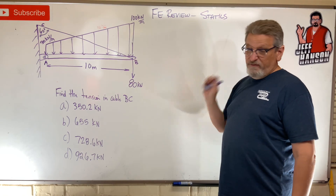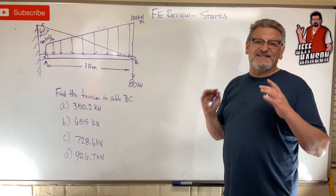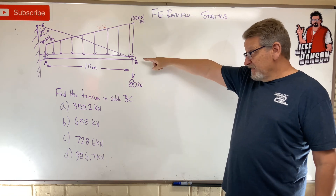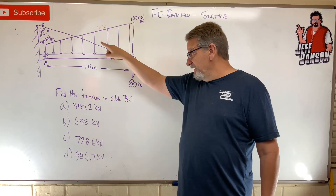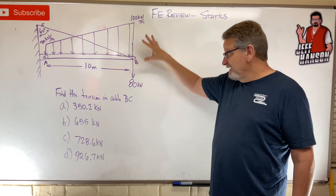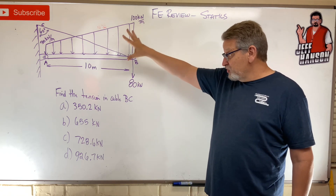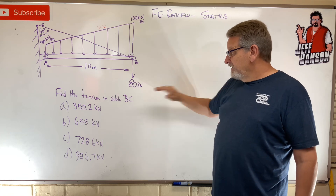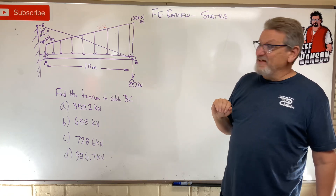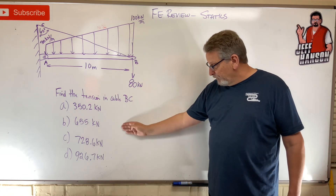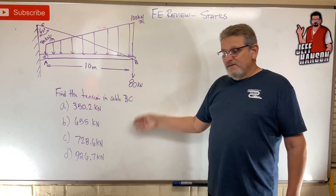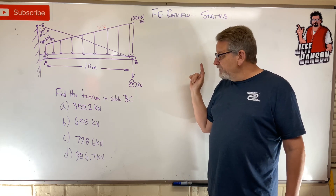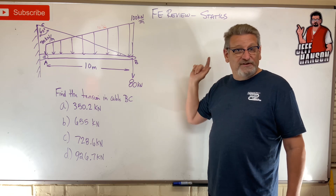Hey team, welcome back. FE Review Problem Statics. We've got a crazy loaded beam. The beam is pinned at one end, it's supported by a cable that goes from B to C, has a distributed load on it, plus a concentrated load, and we need to find the tension in cable BC. There are your possible choices. Solve it when you come back — press pause. I'm going to solve it for you; let's see if we get the same answer.